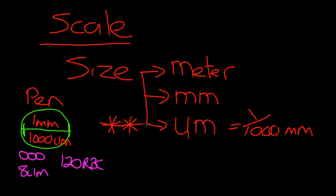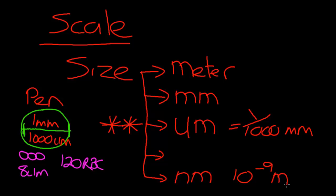Then we go to even smaller numbers. The next common unit is called a nanometre, and a nanometre is ten to the minus nine metres — that's 0.000000001 metres. It's a very small number, and that measurement is used to measure the size of atoms and molecules. So those are the common sizes we use when measuring scale.